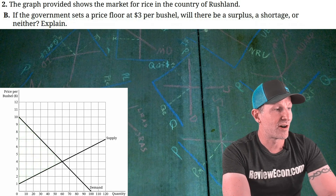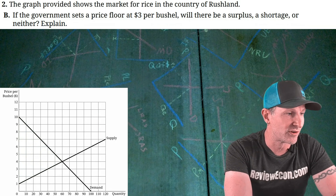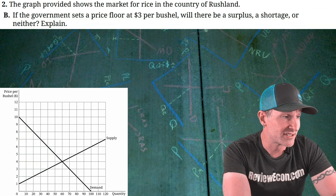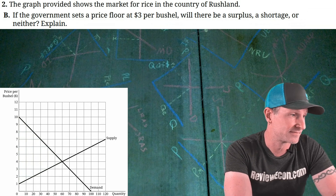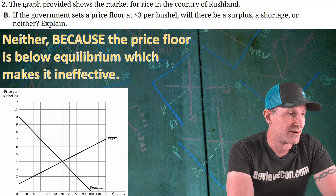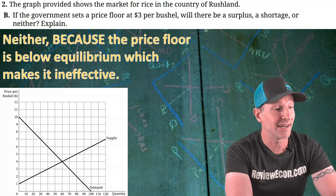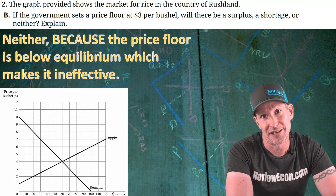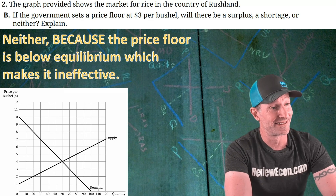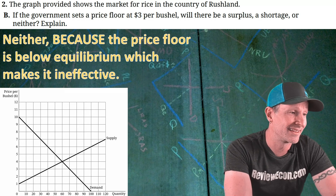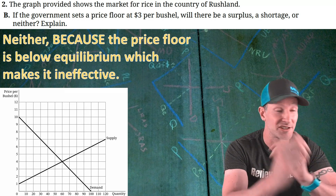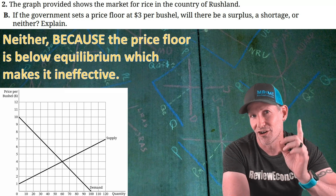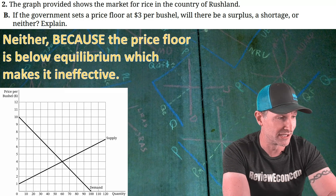For part B: if the government sets a price floor at $3 per bushel, will there be a surplus, a shortage, or neither? My answer: neither, because the price floor is below equilibrium, which makes it ineffective. This was a tricky one — price floors are only effective when they're above equilibrium, so a floor at $3 below the $4 equilibrium does nothing.